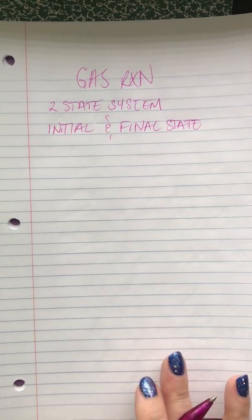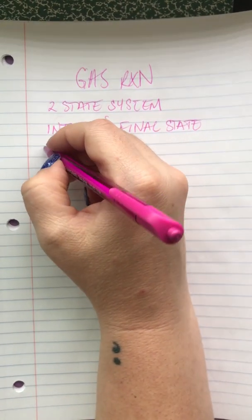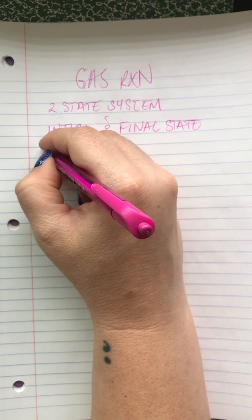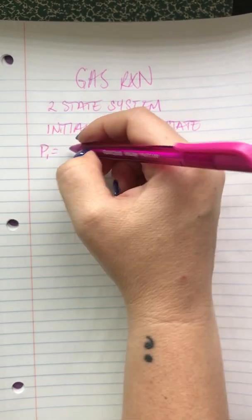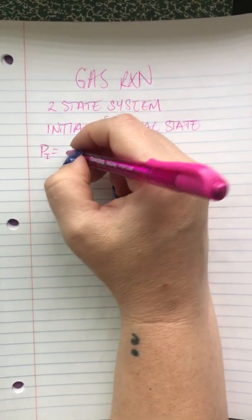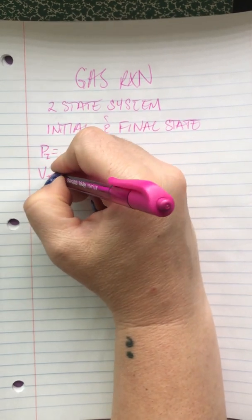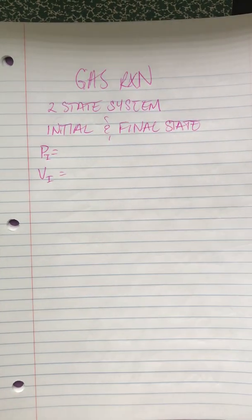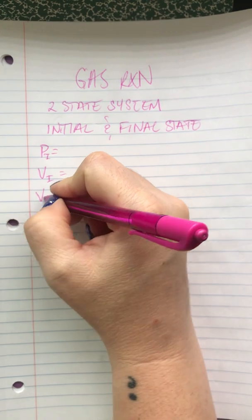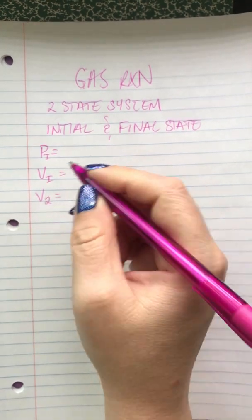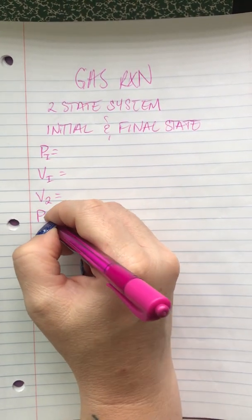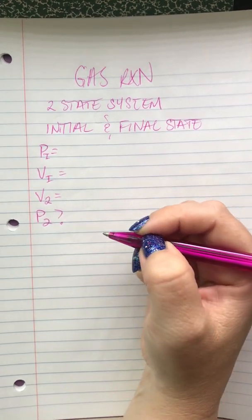So let's say you were given an initial pressure P1, and you were given some initial volume, and then you were given a change in volume, and you were asked to solve for the new pressure.